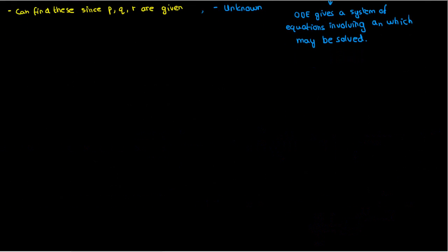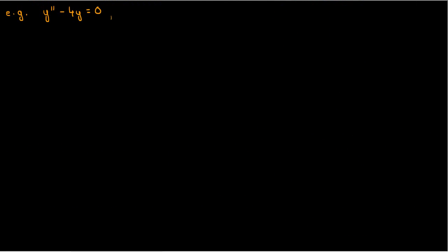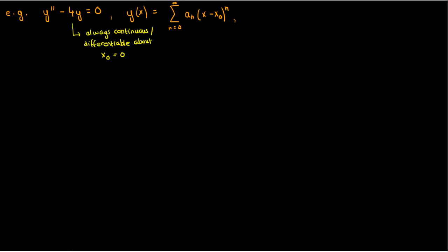Let's illustrate this method with a very simple example. Suppose our differential equation is y double prime minus 4y equals 0. Using the series solution method, let's make y a power series. The easiest point to pick is x₀ equals 0, and since negative 4 is just a constant, it's always continuous and differentiable for any value of x, so x₀ equals 0 is a valid choice.